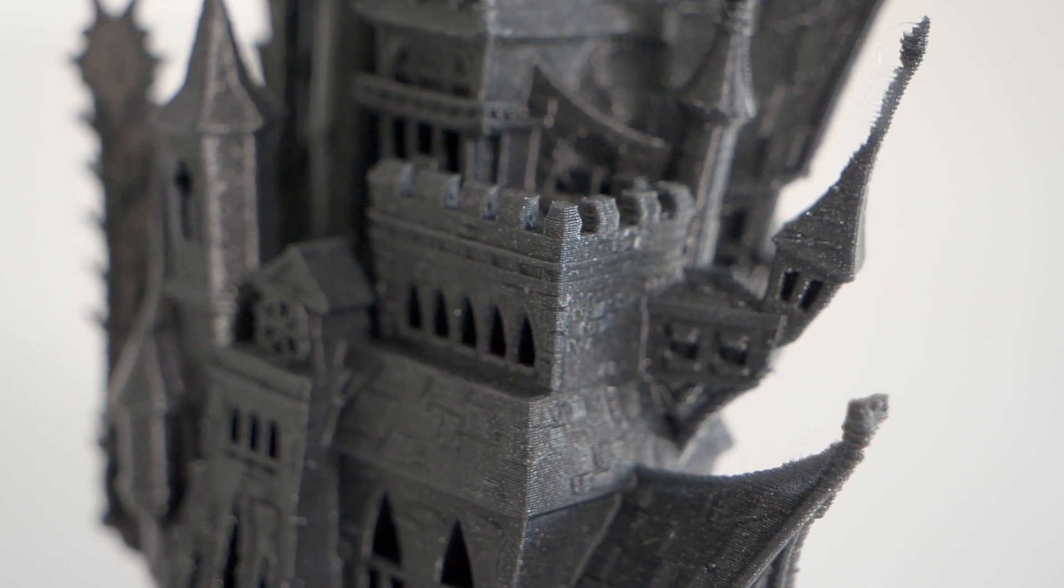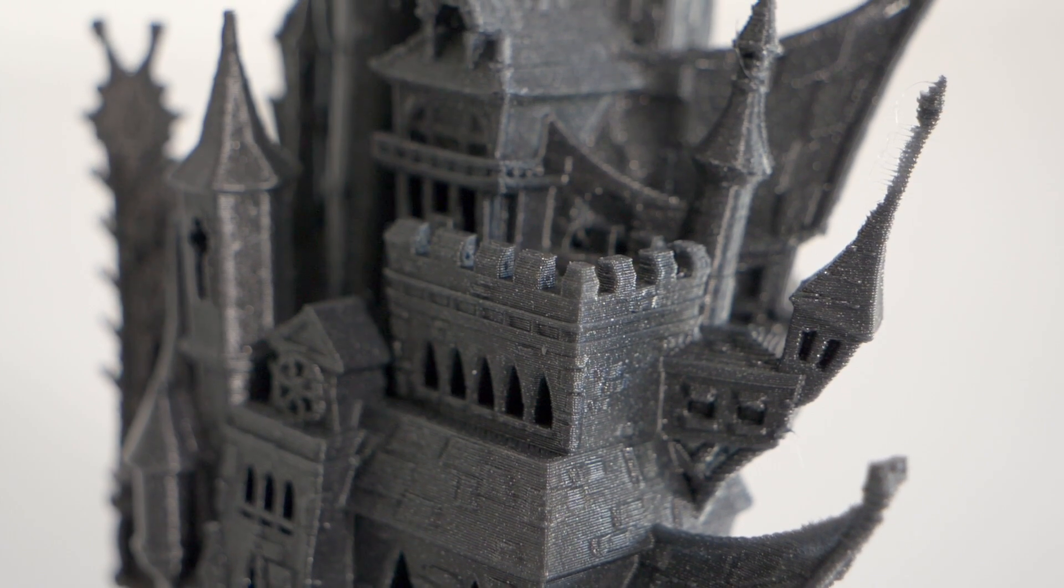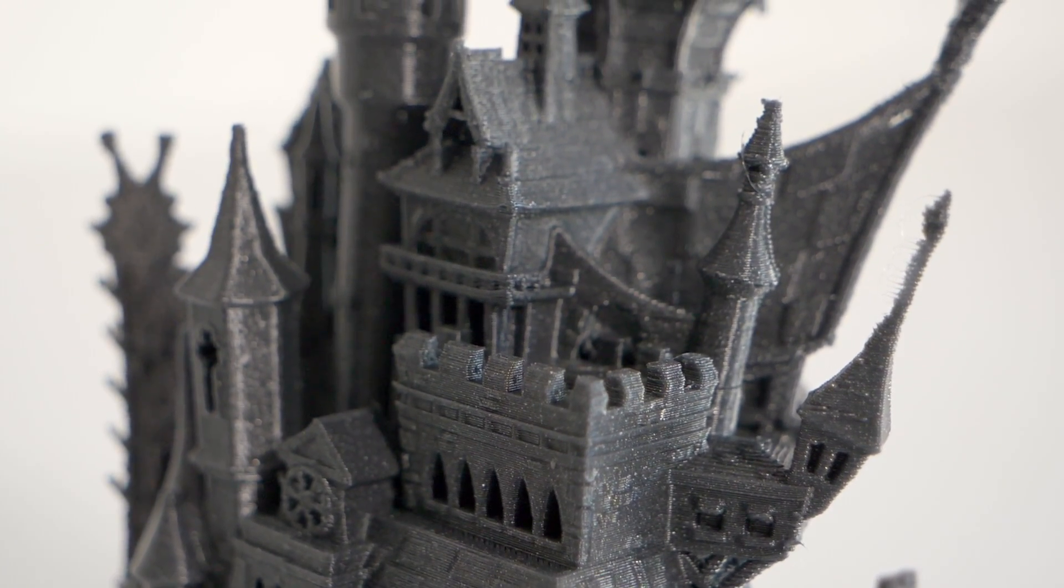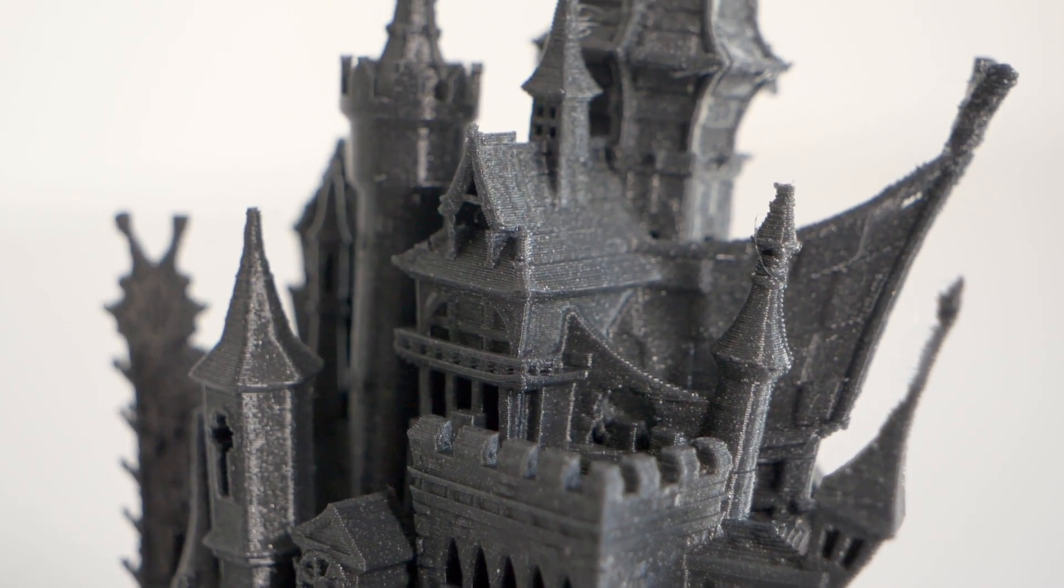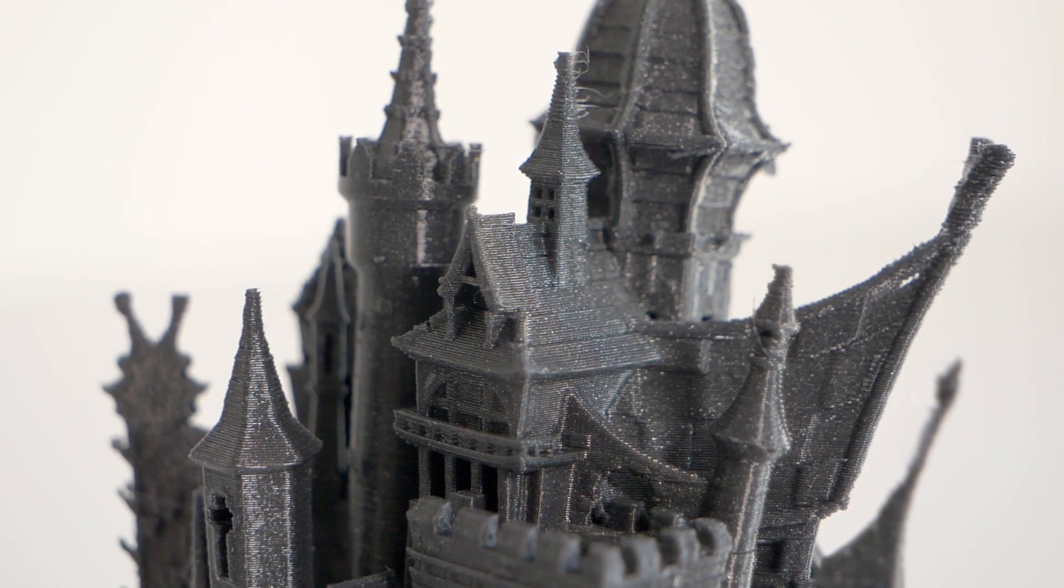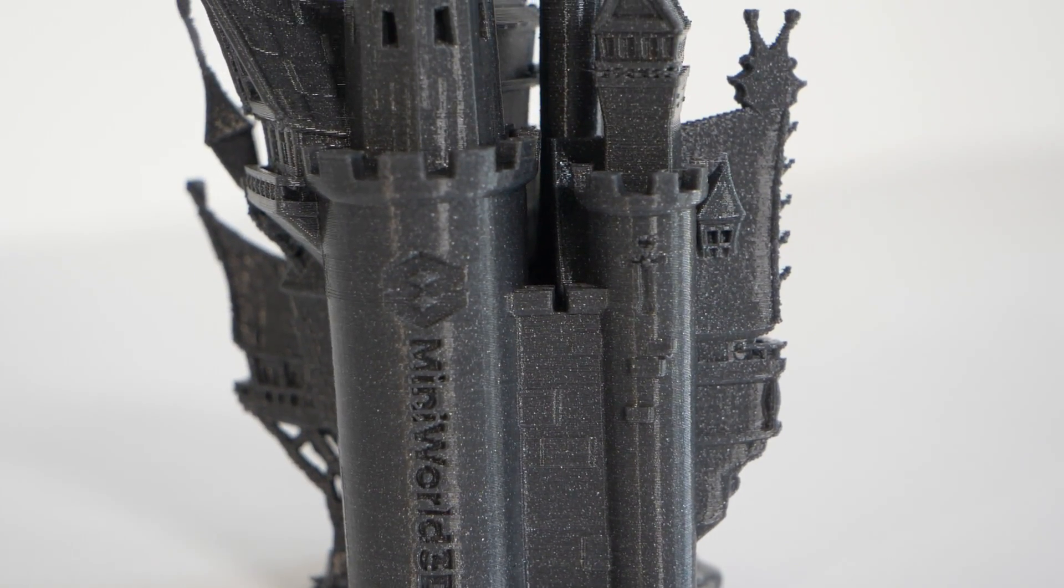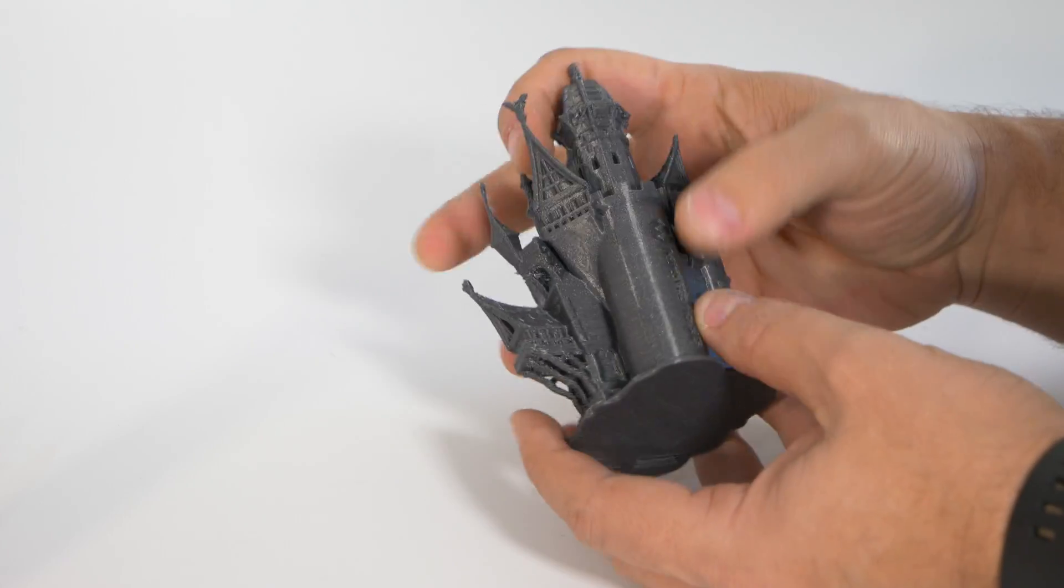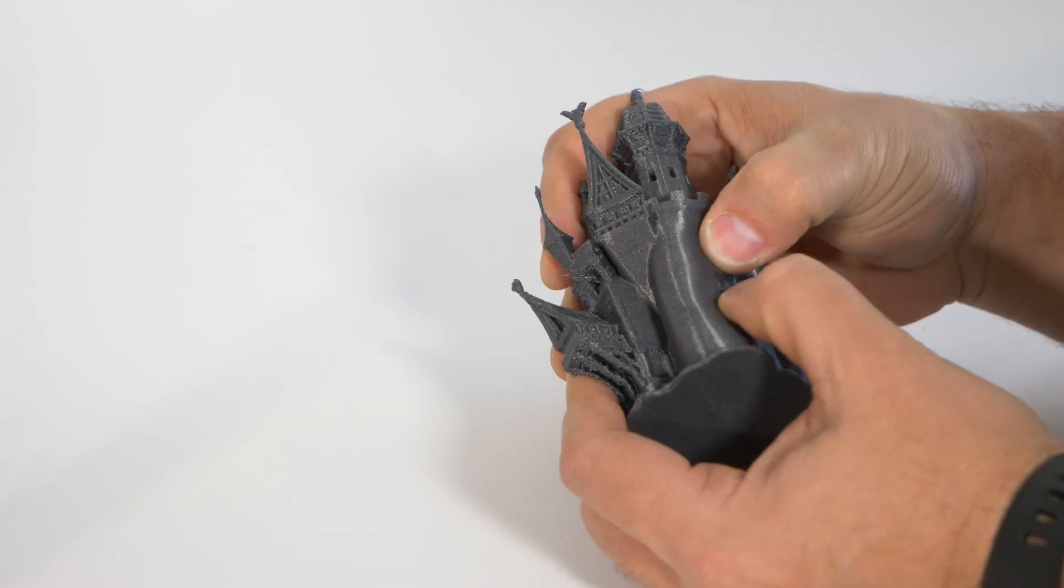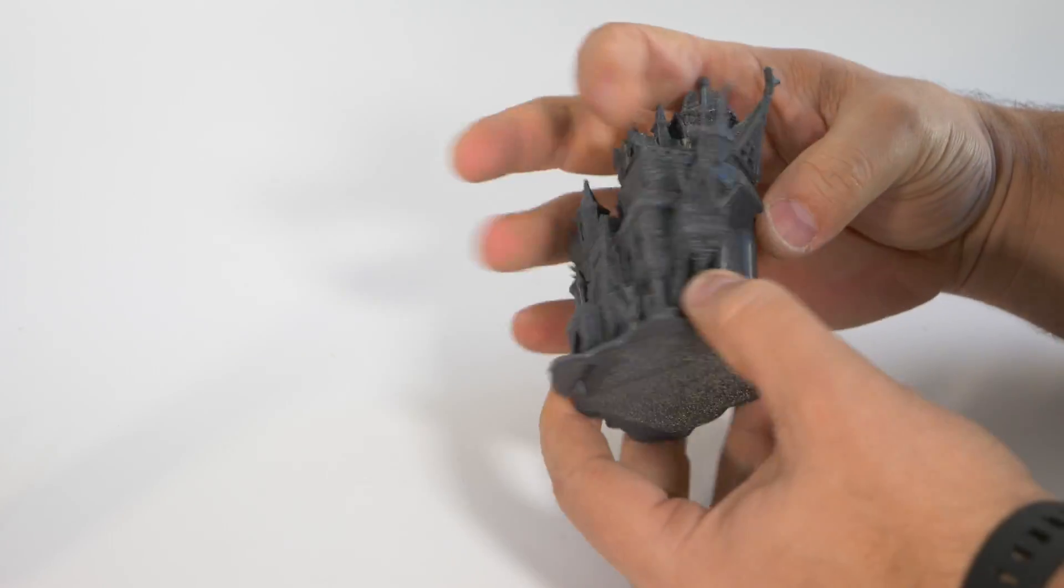So I used some filamentum vertigo gray flexful and started printing. I honestly had my doubts initially that the print would actually succeed, but succeeded it did. Once again, the profile needs some tweaking, but other than that, the quality for TPU print is absolutely insane considering how intricate the model is.